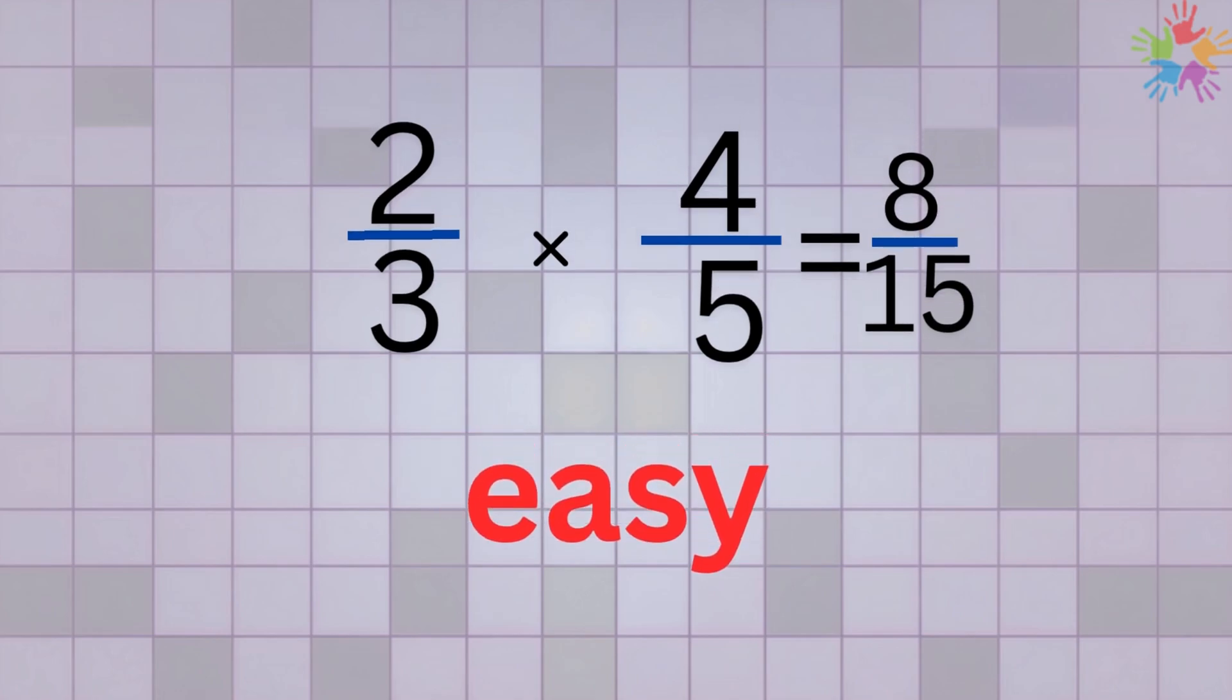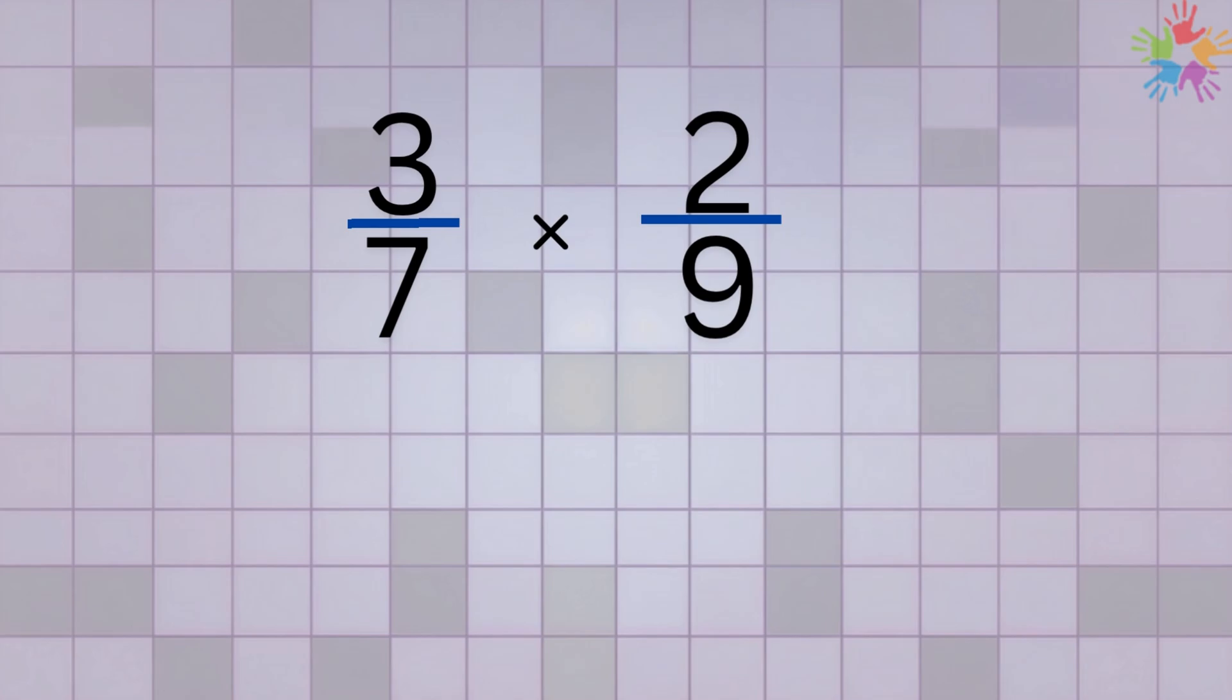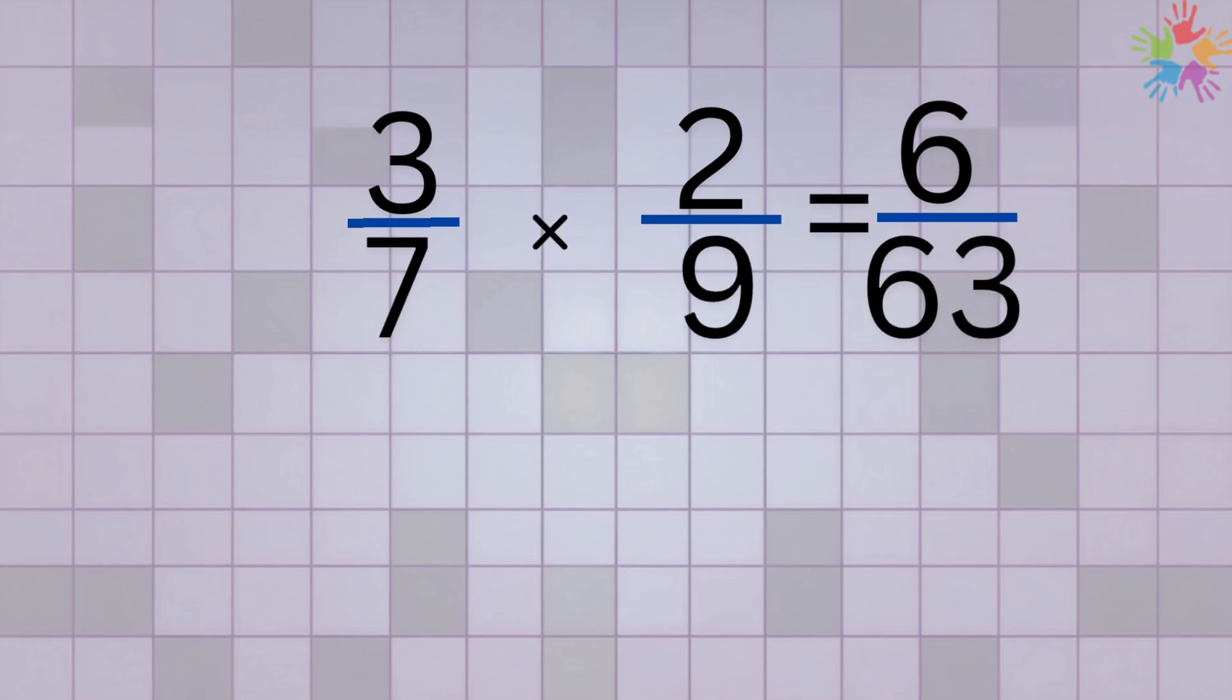That's it. Easy, right? Let's try another example: Multiply 3 over 7 by 2 over 9. First, multiply the top numbers: 3 times 2 equals 6. Next, multiply the bottom numbers: 7 times 9 equals 63. So 3 over 7 multiplied by 2 over 9 equals 6 over 63. And that's how you multiply fractions. Just multiply the tops, multiply the bottoms, and reduce if you can.